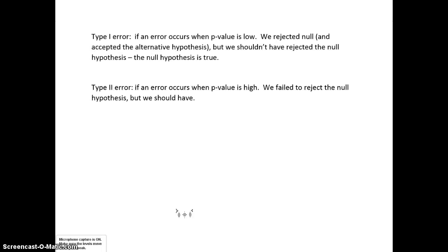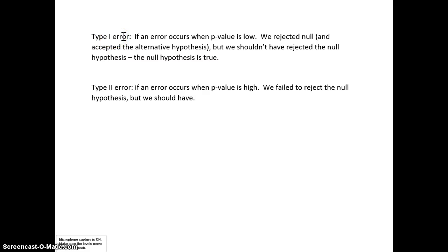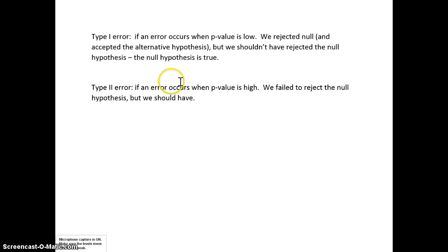Finally, if we run a hypothesis test, an error probably does not occur, but sometimes an error will occur — maybe we just get a bad sample of data. A type 1 error occurs when the p-value is low and we reject the null and accept the alternative, but we had bad data that led us to that conclusion. We're not going to know if an error occurred. At a 5% level of significance, about 5% of the time there will be an error. A type 1 error means we rejected the null, but we shouldn't have — the null is really true.